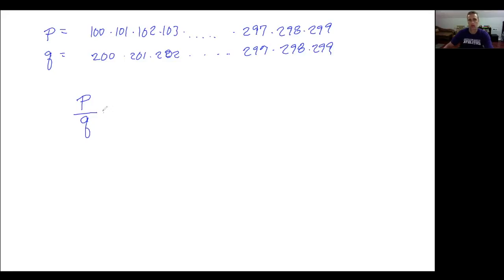All right so they end at the same place and the question is what is P over Q what is that equal and we have those answer choices which I'll go ahead and write: A is 99 factorial, B is 199 factorial, C is 199 factorial over 99 factorial, D is 299 factorial over 99 factorial, and E is 299 factorial over 199 factorial.